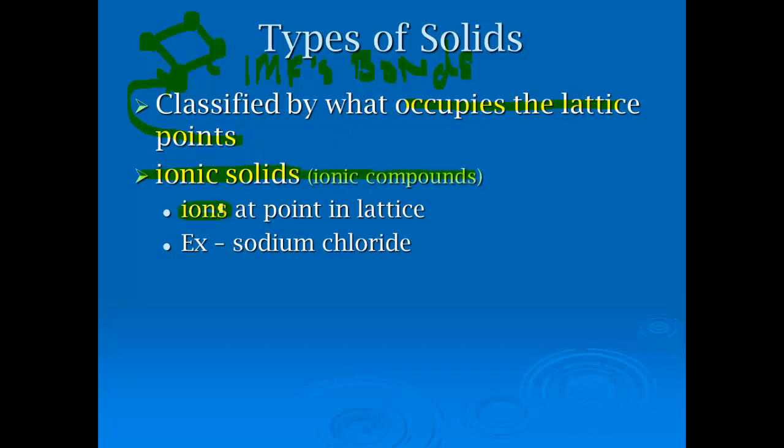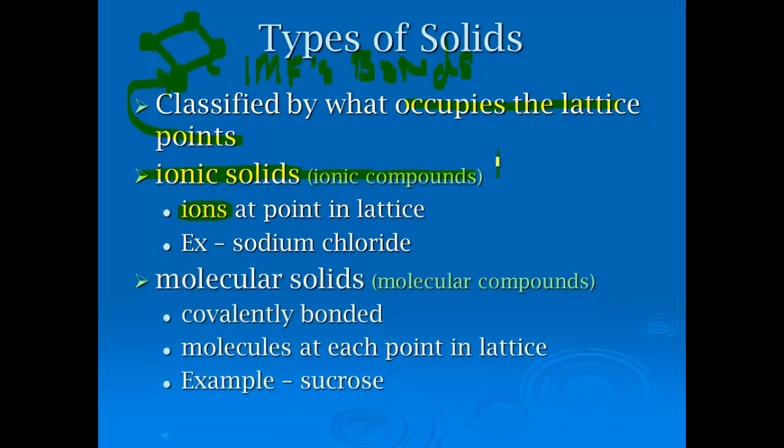Ionic compounds have ions at every point in the lattice. Example is sodium chloride, where you have sodium ions connected to chloride ions in this repeating pattern. Your ions are at your points.